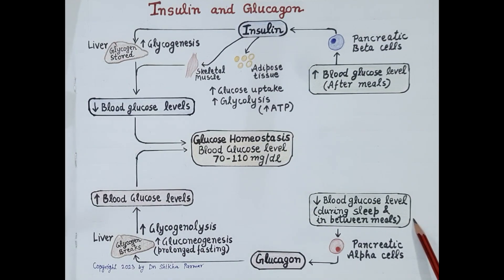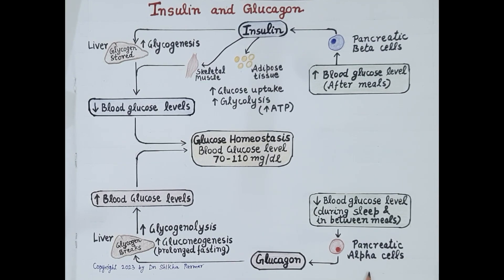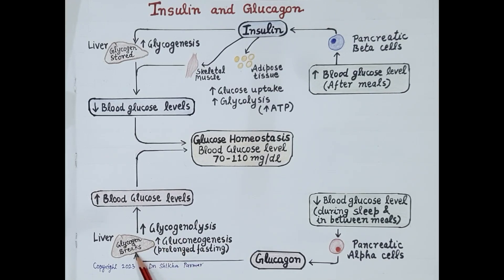On the contrary, during sleep and in between meals when we are not eating and the blood glucose levels fall, glucagon is released from pancreatic alpha cells. Glucagon promotes glycogenolysis, and thus glycogen stored in the liver breaks down to release glucose in the blood.